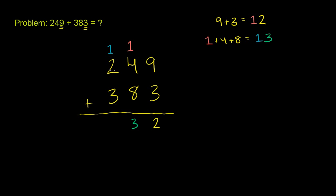Same process now in the hundreds place. This 1 actually represents 100, because this was actually 130 in the tens place. So we have 1 plus 2 plus 3. What is that? Well, that's just 6. 1 plus 2 is 3, plus 3 is 6. So we write it right over here. So 249 plus 383 is 632.